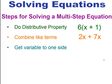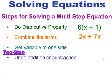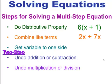Once you've done these three steps, it will come down to either a one-step or a two-step equation. Remember, in a two-step equation, you're going to first undo the addition or subtraction, and then you're going to deal with what's attached — whether it's multiplication or division — so you undo the multiplication or division last.